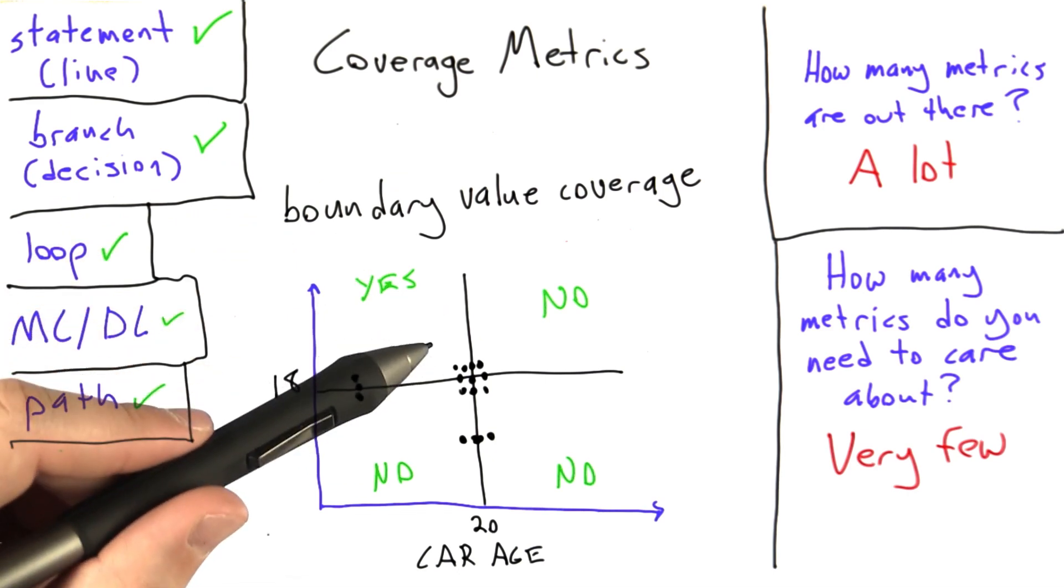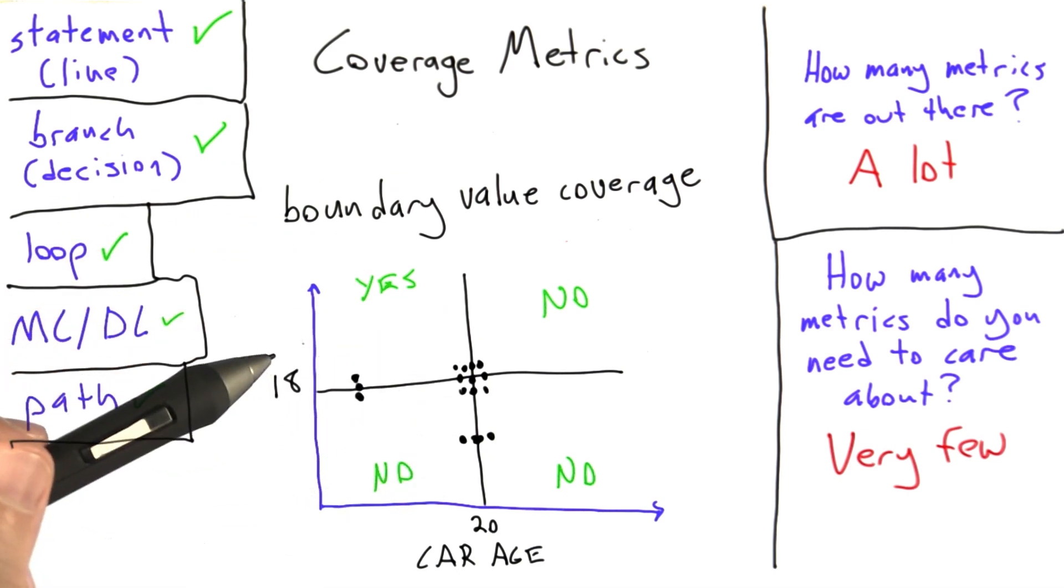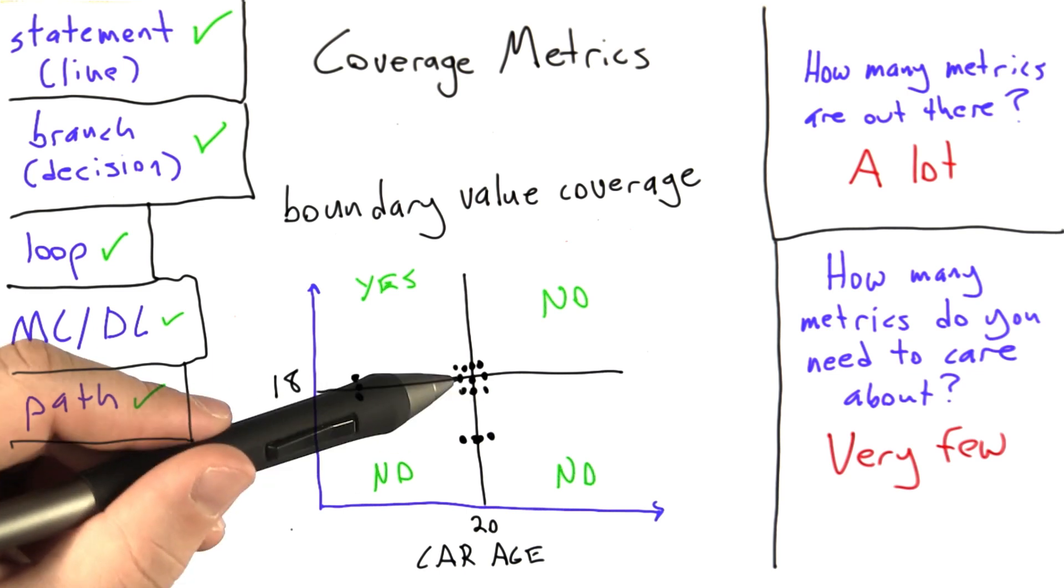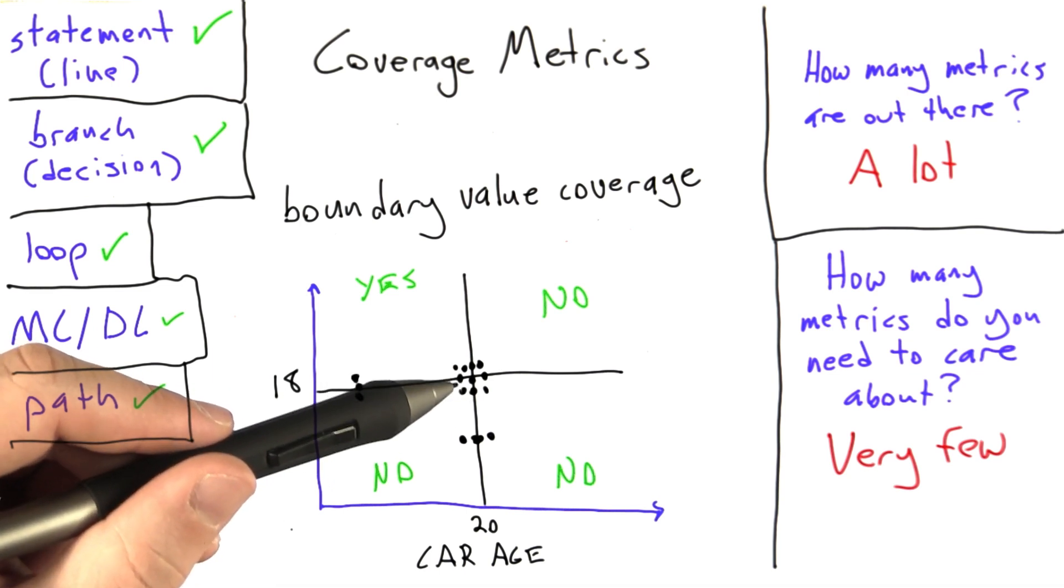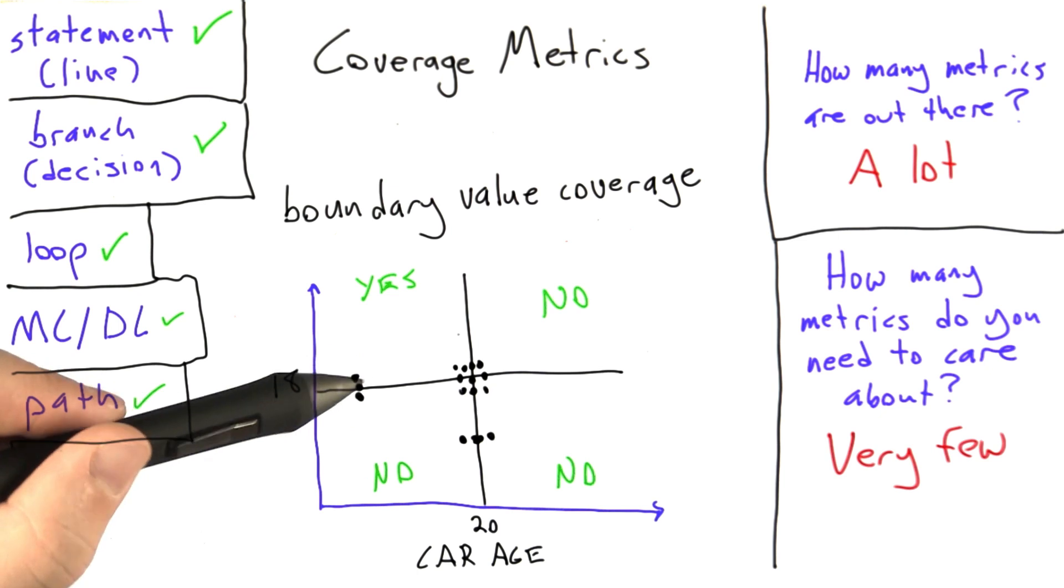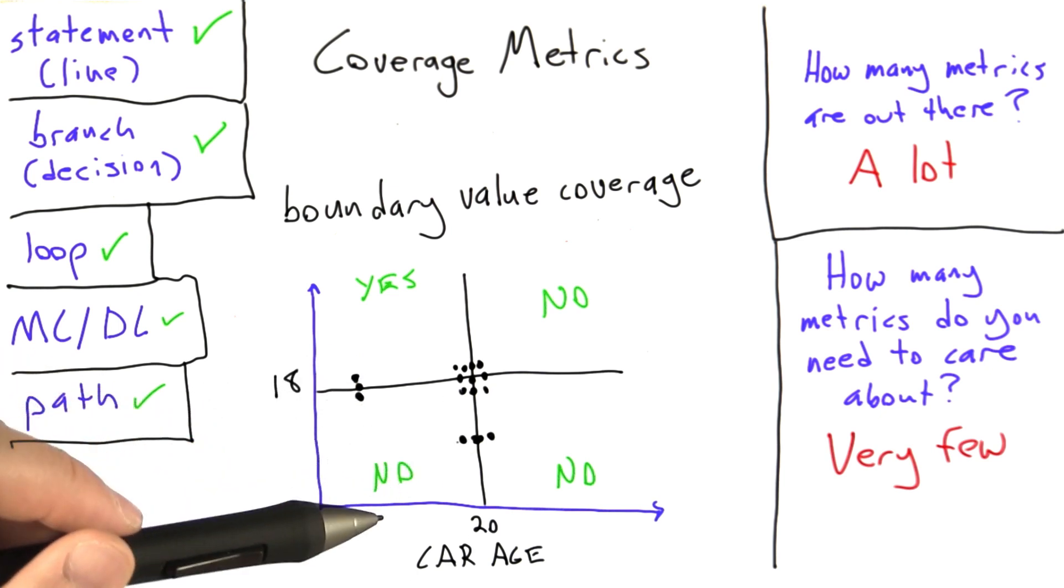You can see the problem here is that, as the number of inputs to the program goes up, the number of test cases can grow very large because we have to consider the interaction between all possible combinations of variables that are dependent. On the other hand, if our variables are independent, then we can test them separately.